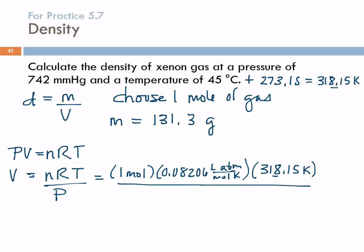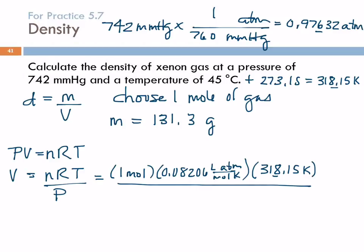And then we're going to divide by the pressure. They gave us pressure in millimeters of mercury. So we need to convert that. 742 millimeters of mercury, we need it to be in atmospheres. Multiply by atmospheres, divide by millimeters of mercury. One atmosphere is 760 millimeters of mercury. So 742 divided by 760, 0.976, there's my three sig figs, carry two extras, there's my pressure. 0.97632 atmospheres.